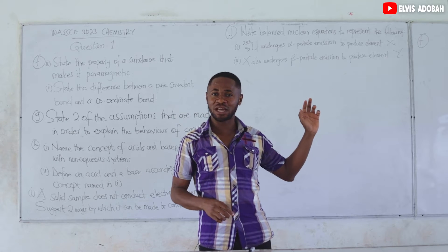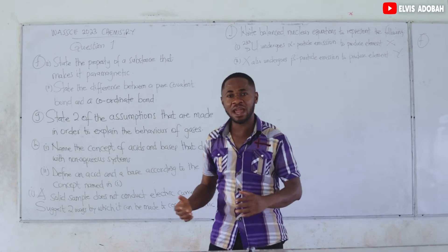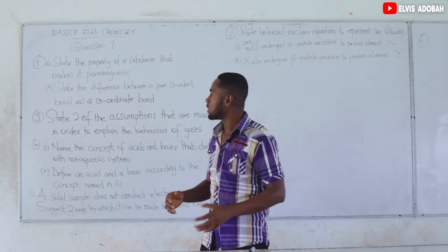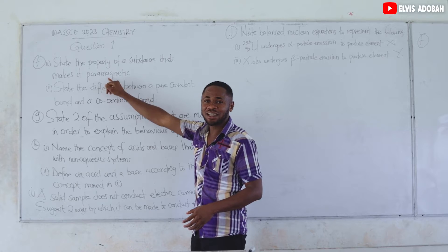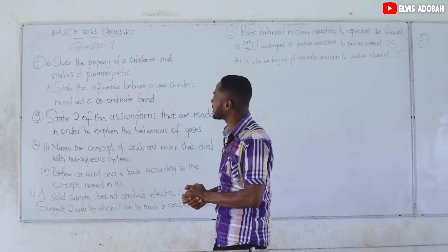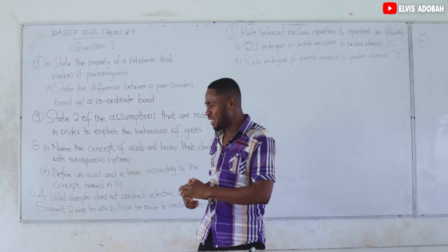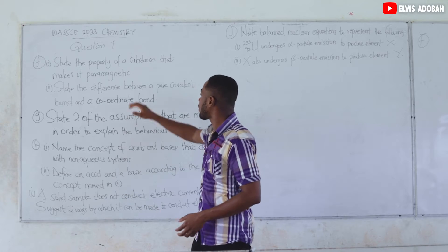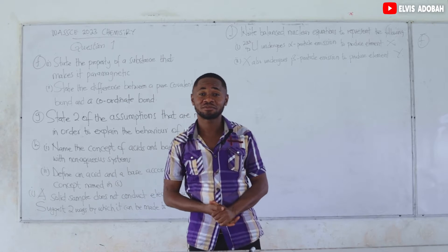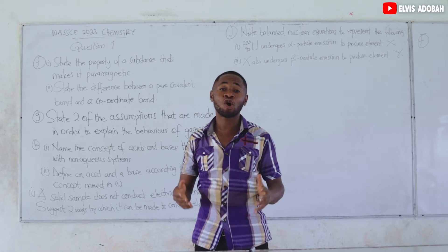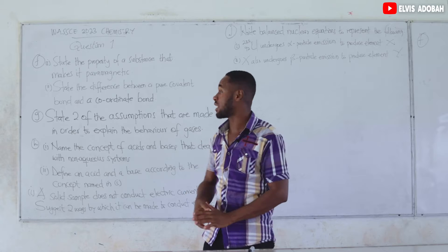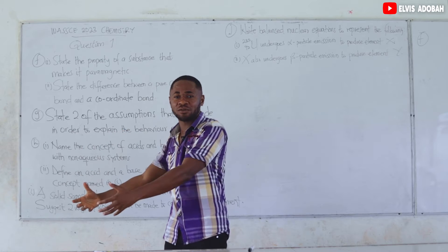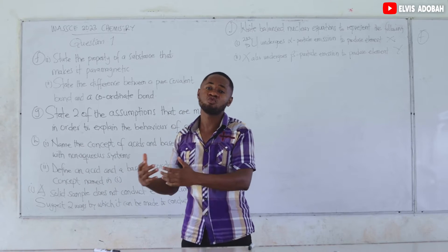For diamagnetic substances, theirs is a different thing altogether — they are repelled by a magnetic field. This question is talking about paramagnetic substances, asking us the property that makes a substance attracted towards a magnetic field. Since they have partly filled d orbitals, they are attracted towards a magnetic field, but their attraction is very weak.